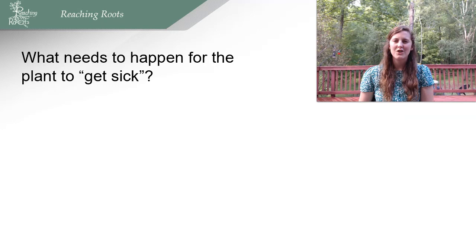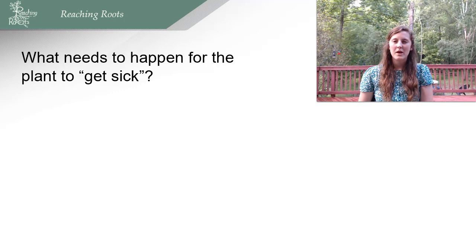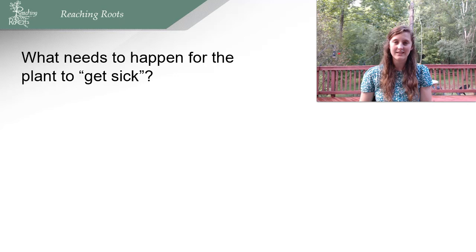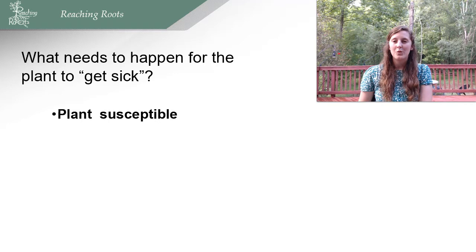So what happens when plants get sick? Just like us, plants can get infected with bacteria, viruses, or fungi that cause disease, or insects. But what needs to happen for plants to get sick? A lot of plants are growing healthy all the time, even though they're interacting with bacteria, fungus, viruses, and many insects. Three important things all have to occur at the same time for a plant to get sick. Plant pathologists call this graphic the disease triangle.